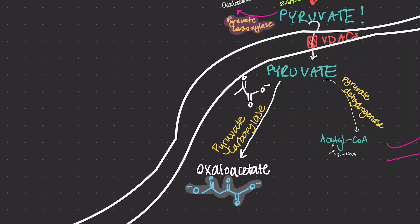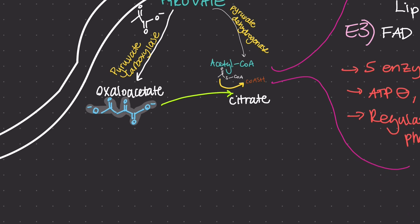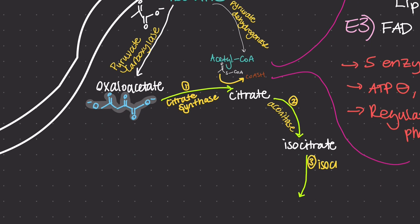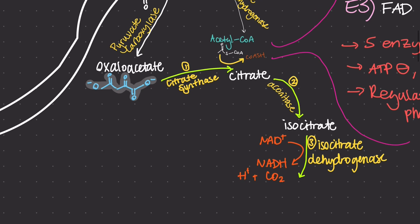In the first step, oxaloacetate is catalyzed by the enzyme citrate synthase to form citrate. Then, citrate is isomerized by an enzyme known as aconitase into isocitrate. In the third step, isocitrate is oxidized to form alpha-ketoglutarate, releasing one molecule of CO2 and reducing NAD+ to NADH.